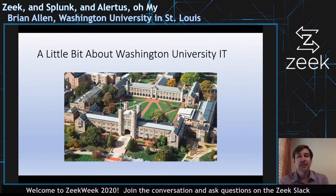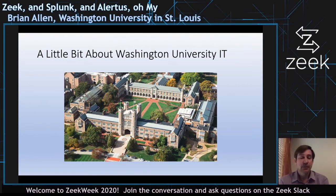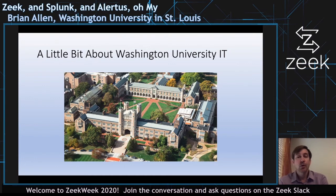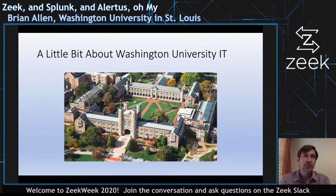WashU is a decentralized IT campus — every school has their own IT department historically, with their own staff, servers, software, and desktops. About four or five years ago this started to change and we became more consolidated into a group called WashU IT. But there are still a lot of departments outside of WashU IT. If a machine is in WashU IT and we need to track it down during an incident, it's usually pretty easy. But if it's outside in some smaller department where maybe the logs aren't perfect, it can be harder.